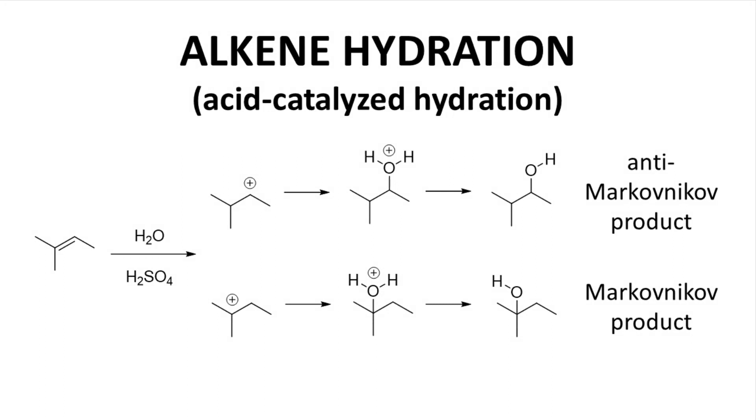How about alkene hydrations, specifically acid-catalyzed reactions in water? Alkene hydrations begin with an acid protonating an alkene. In theory, you can add the proton to either side of the alkene, and this is the start of the regioisomeric outcome of the reaction. So you can get two isomeric carbocations.